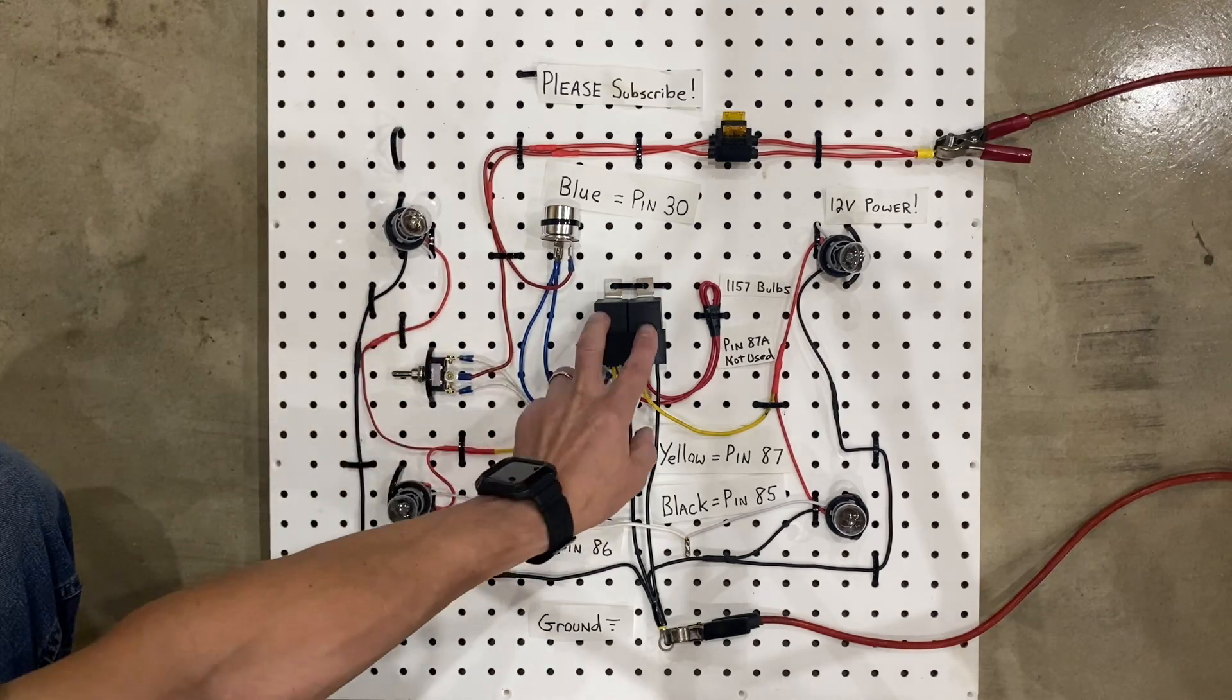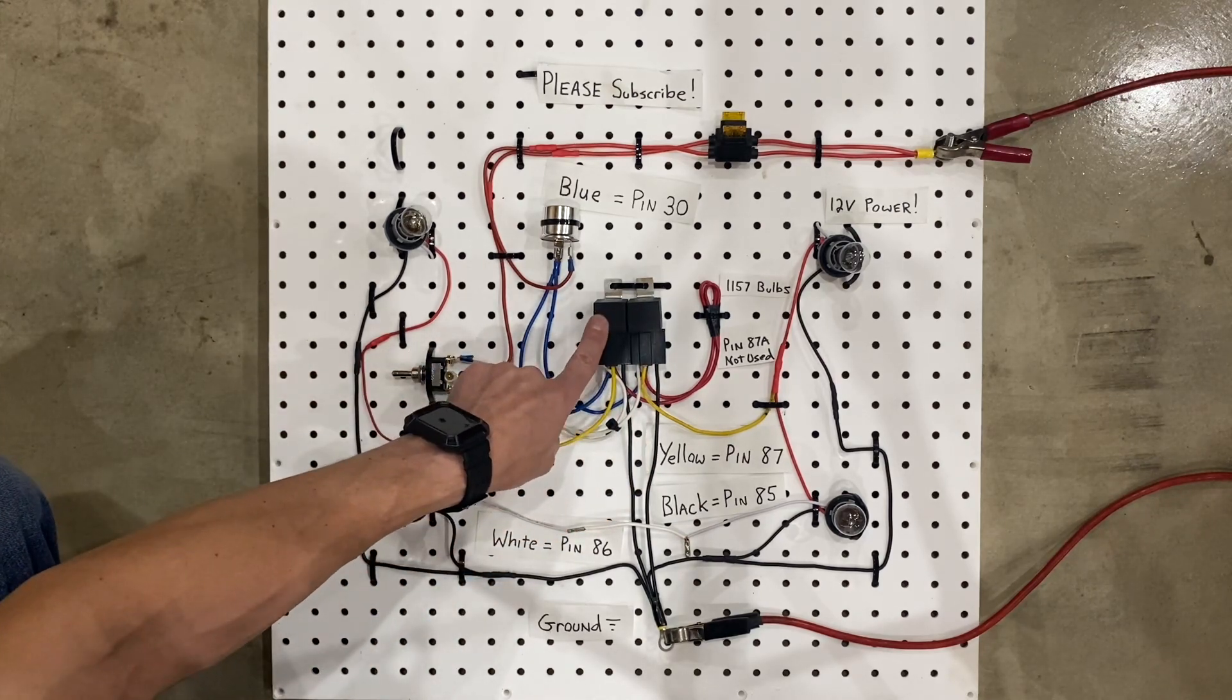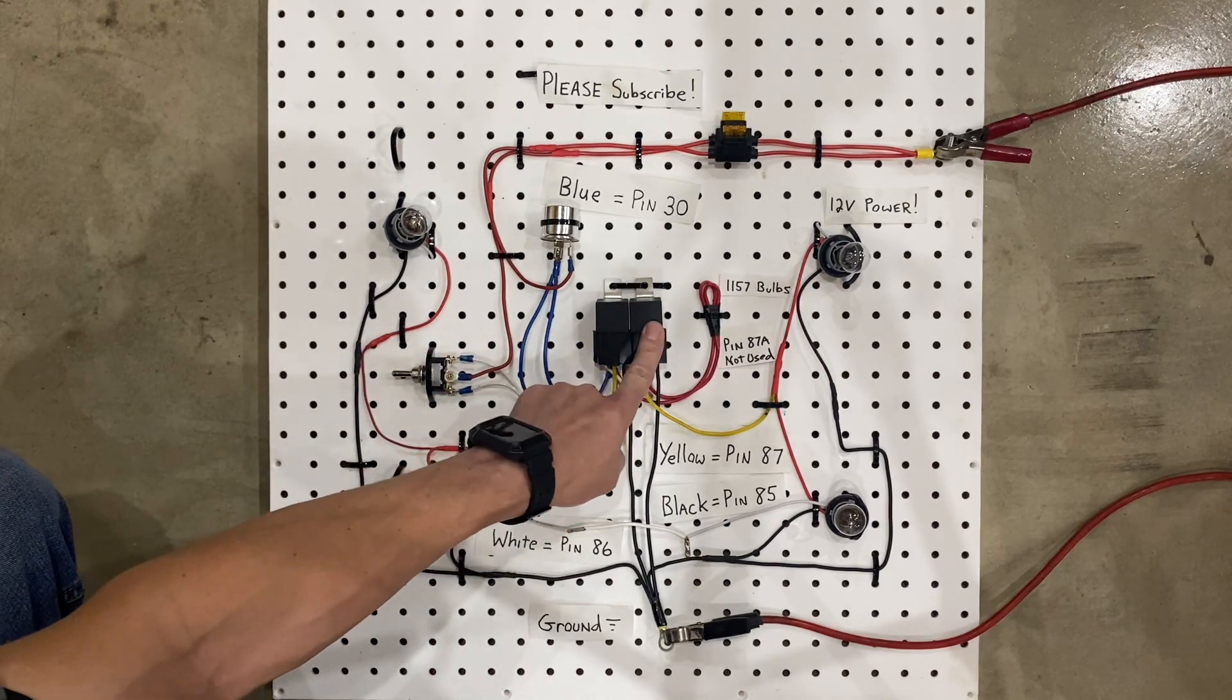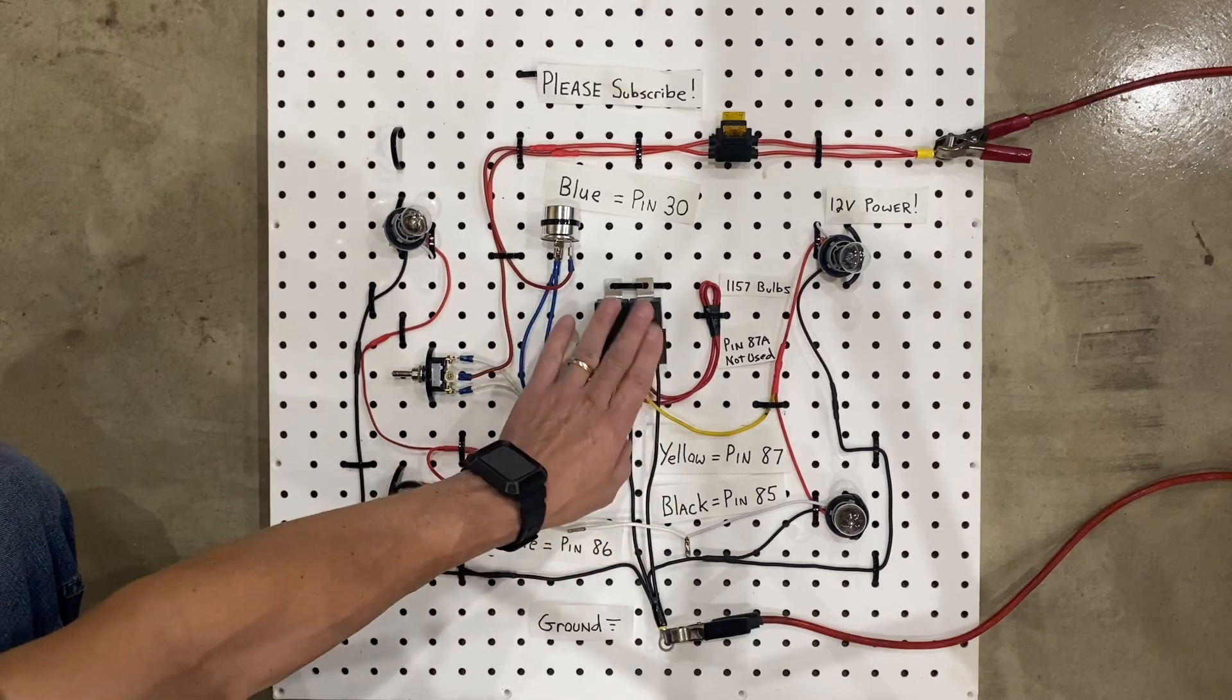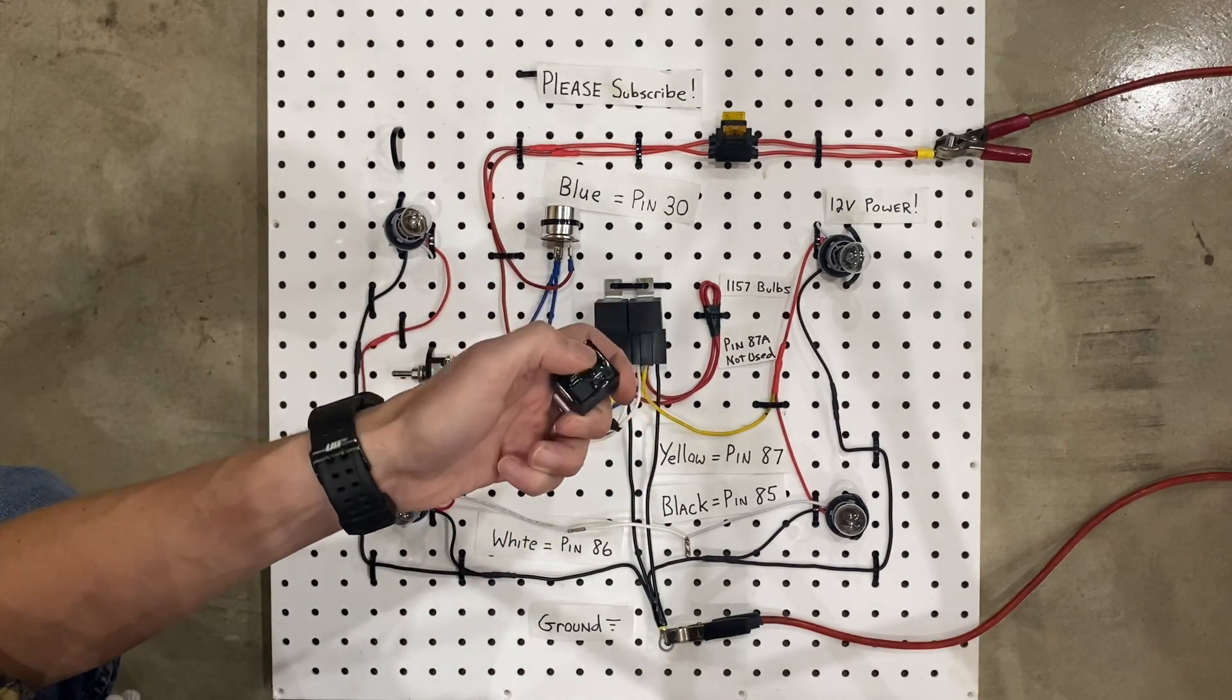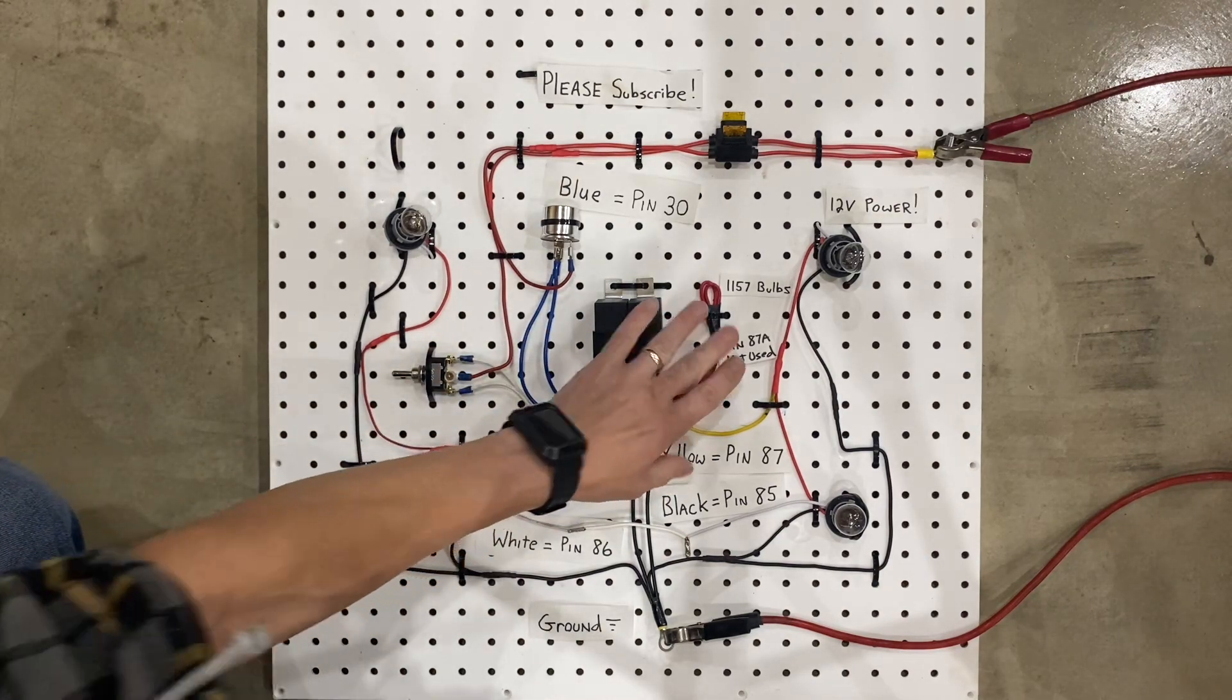Each wire goes to a different relay. So, you have one wire going into pin 86 on this relay for the left directionals, and the other side is the white wire going into the relay for the right directionals on pin 86. The only wire that I'm not using on these relays is pin 87A. If you want to use a four-pin relay, that's totally fine. You're just going to not have pin 87A, and that's fine because we're not using pin 87A anyways.